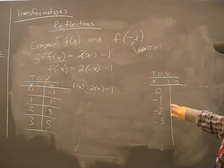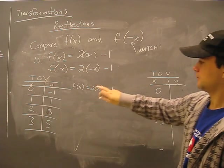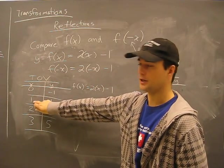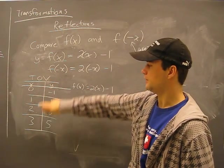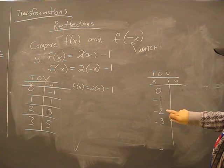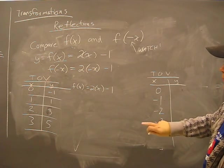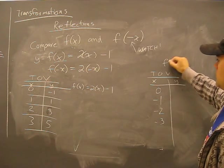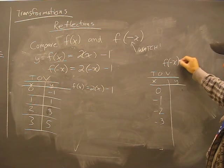So now I'm going to set up the table of values. Now I'm dealing with, before I was just putting in x into there, now I'm going to put a negative x in. So here's a negative, negative, negative, negative.